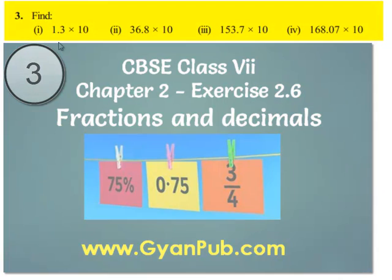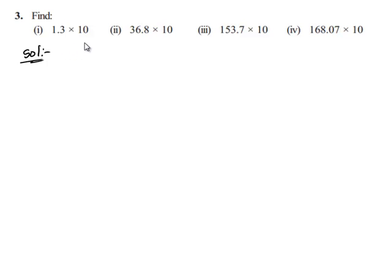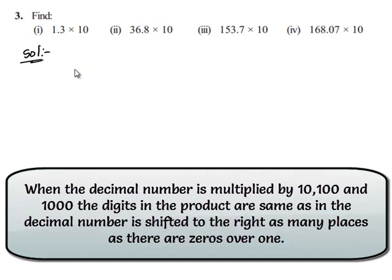Moving on to the third question, we are given to find the value of the decimals which are multiplied by 10, 100, and 1000. We know that when a decimal number is multiplied by 10, 100, or 1000, the digits in the product are the same as in the decimal number, but the decimal point in the product is shifted to the right by as many places as there are zeros.